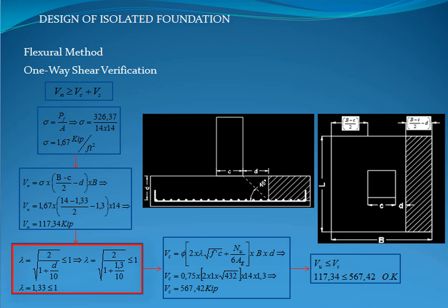Now, we calculate lambda, resulting in 1.33, which is greater than 1, we take 1. The next step is calculate the shear strength of the concrete, giving a result of 567.42 kilopounds. The last step of this verification is compared that the factor shear force isn't greater than the shear strength of the concrete, and as we can watch, the verification passed.